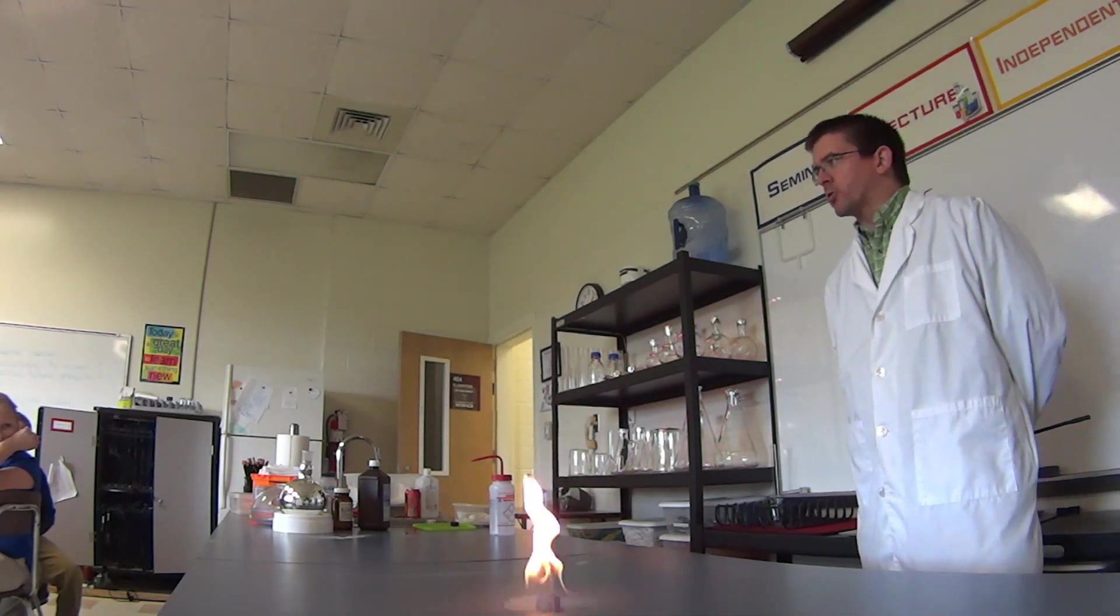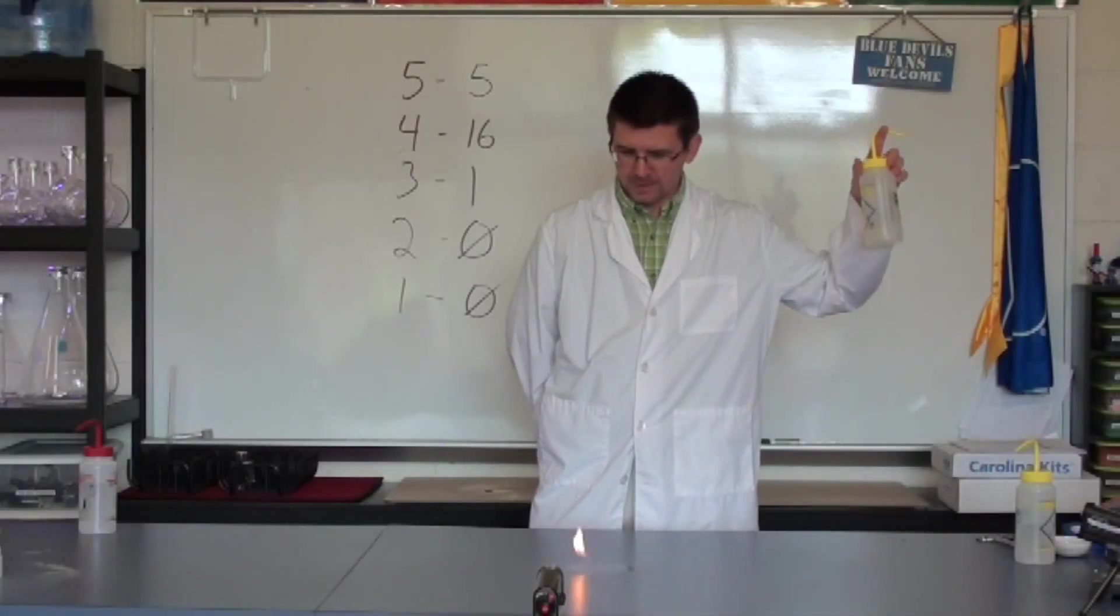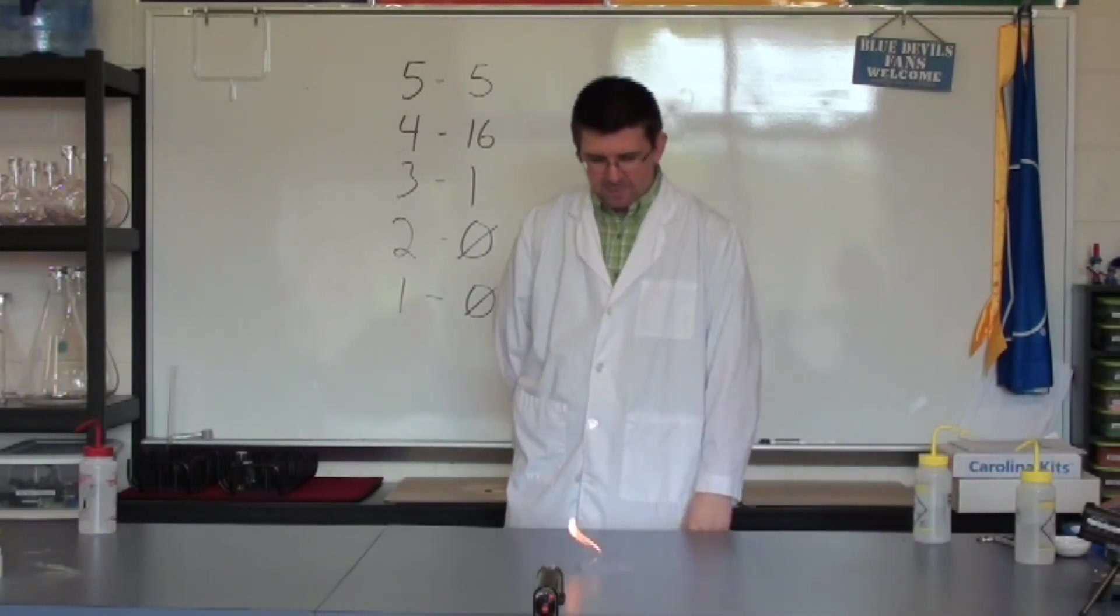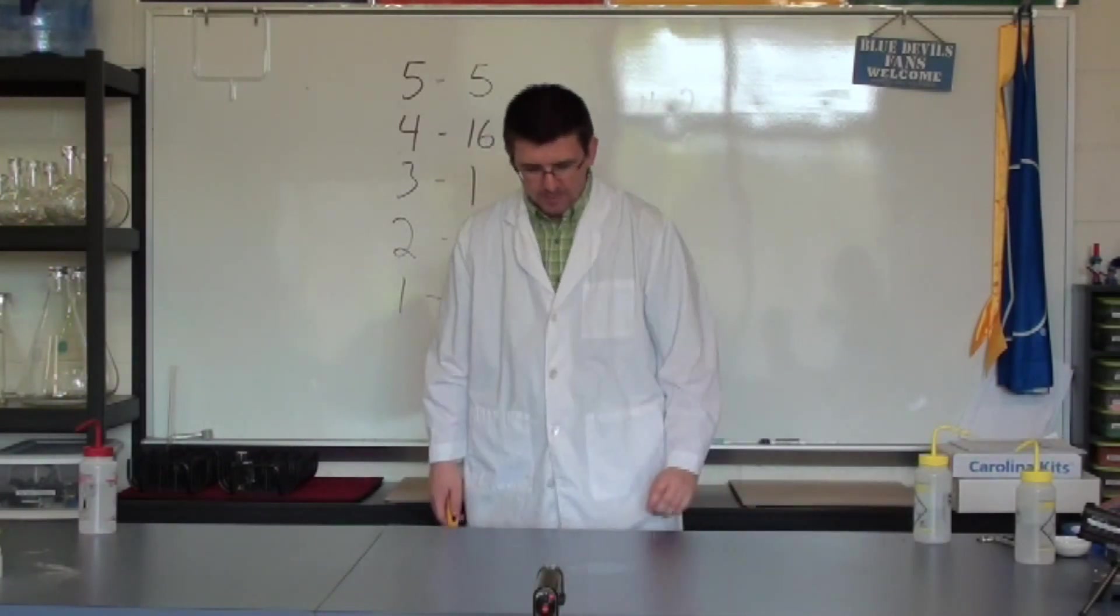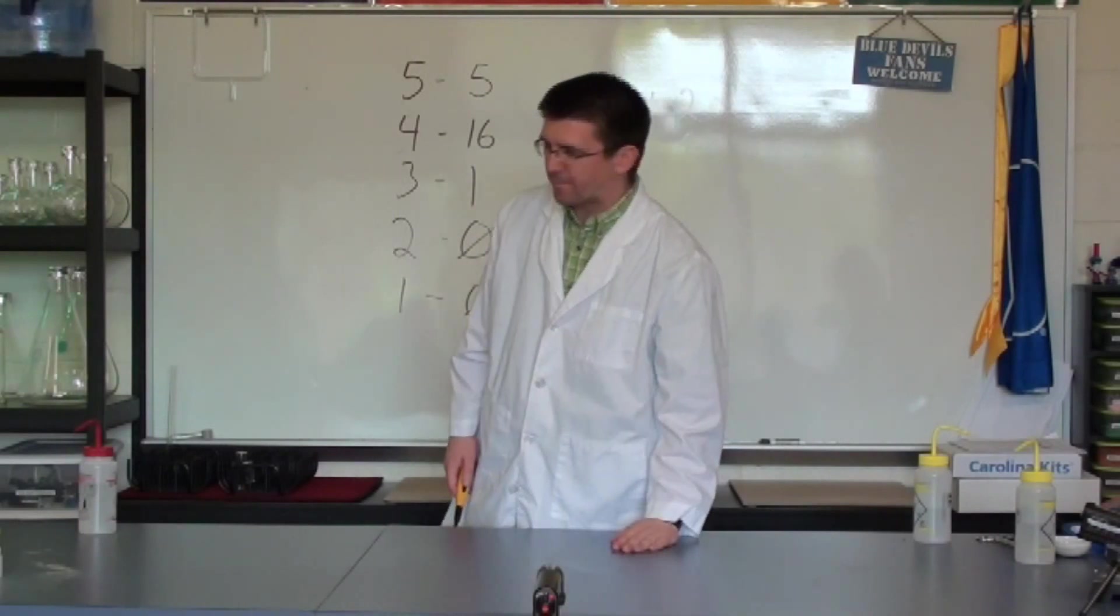Once all the alcohol is burned out, what are we left with? What else is in the 70% alcohol? Water. Water. So you still see, even where it's not burning anymore, the table's still wet, right? Because that's just the water that's left behind.